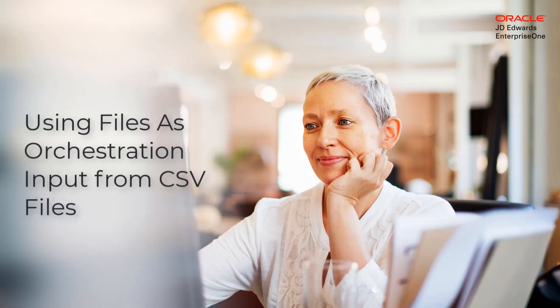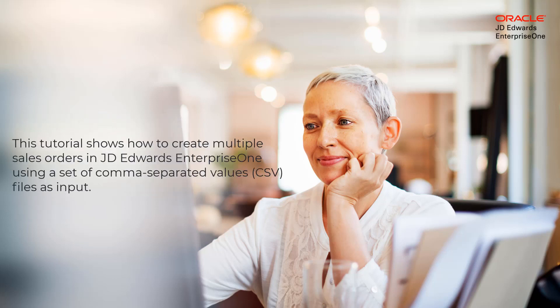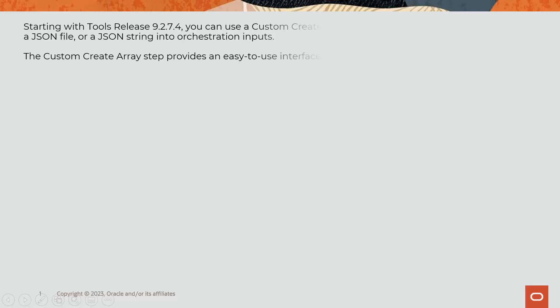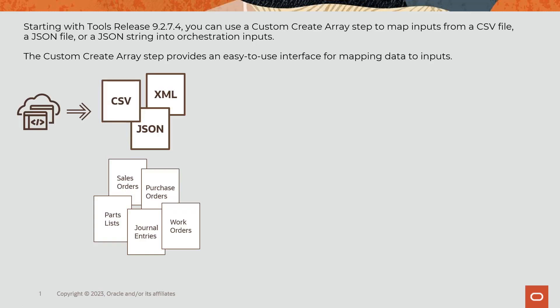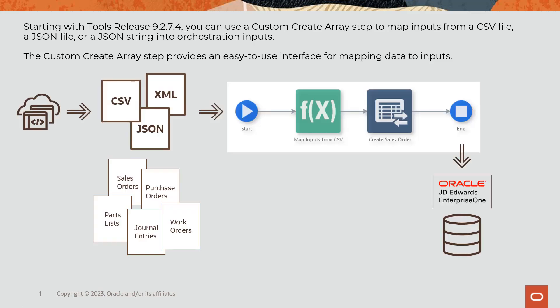This tutorial shows how to create multiple sales orders in JD Edwards Enterprise One using a set of comma-separated values files as input. Starting with Tools Release 9.2.7.4, you can use a custom Create Array step to map inputs from a CSV file, a JSON file, or a JSON string into orchestration inputs. The custom Create Array step provides an easy-to-use interface for mapping data to inputs.